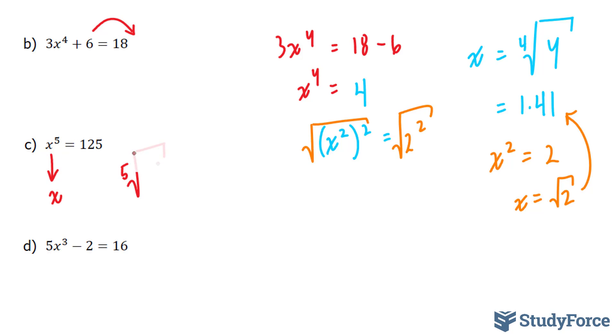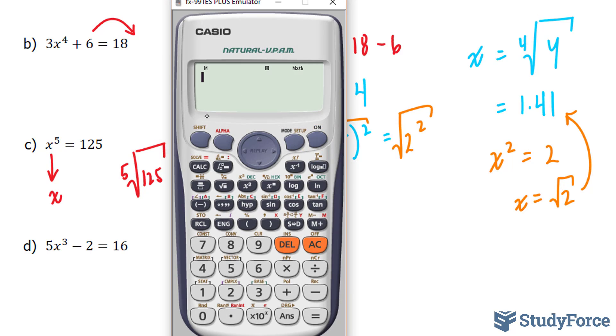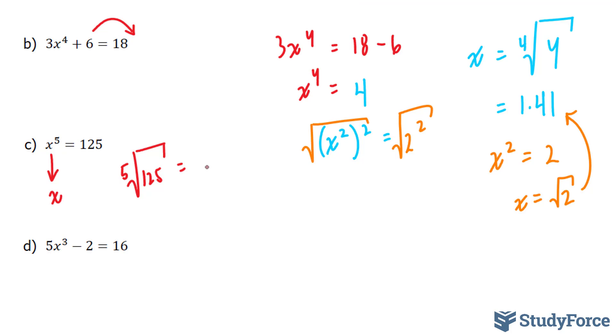But if I take the fifth root of 125, let's see where that will take me. Shift, this button, the fifth root of 125 is equal to approximately 2.62. 2.62, and that's the final answer.